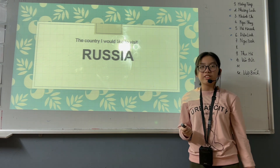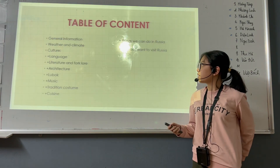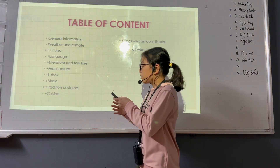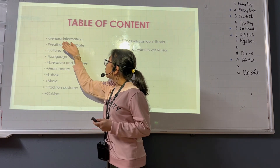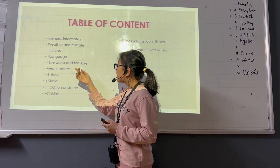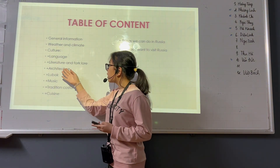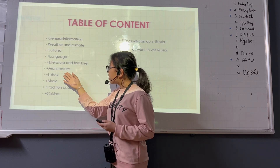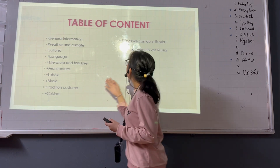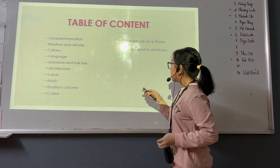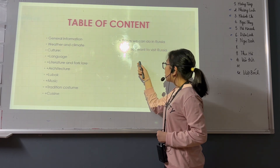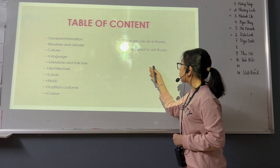The country I would like to visit is Russia. Table of contents: First, general information. Second, weather and climate. Next, culture — including language, literature and folklore, architecture, Lubok, music, traditional costume, and cuisine. Next, things we can do in Russia. And the last one is why do I want to visit Russia?